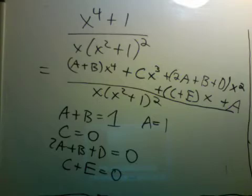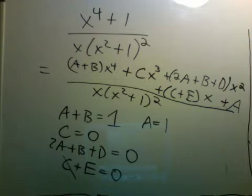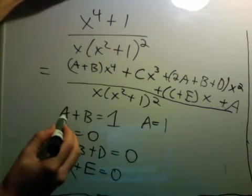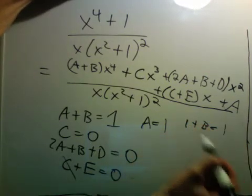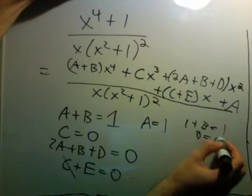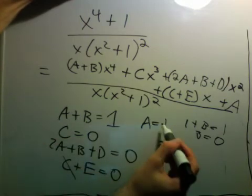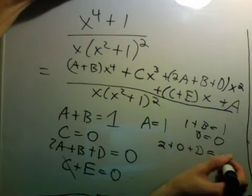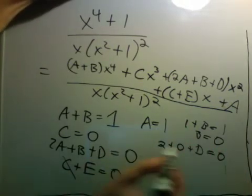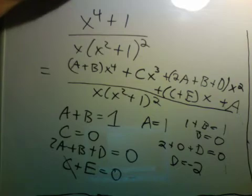So we have 5 equations and 5 unknowns, but it's actually really easy. C is 0, so it doesn't apply here, so E is also equal to 0. A is equal to 1. So that says 1 plus B equals 1, or B equals 0. So looking here, I have 2 times A is just 1, plus 0, plus D equals 0. So that says D is negative 2.